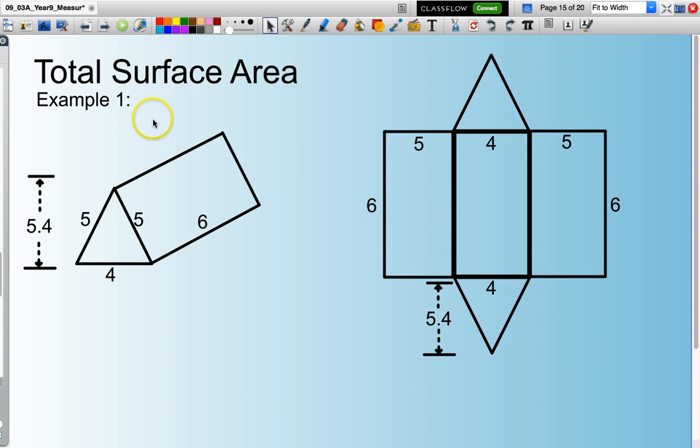So if I need to calculate the total surface area of any shape what I really need to do is construct a net. Now a net basically is a two-dimensional representation of that shape. So you'll see here this is a triangular based prism. So I'll have a triangle at the front of the prism and a triangle at the back and that are represented here.